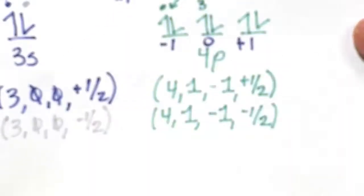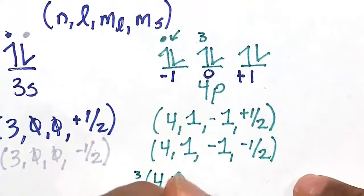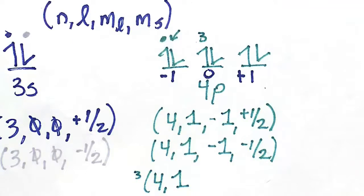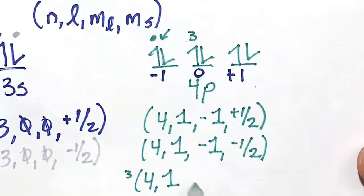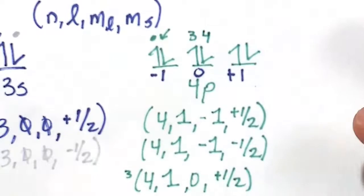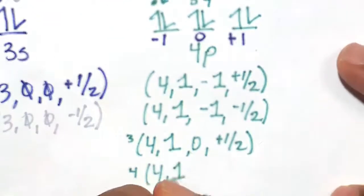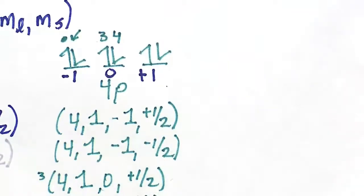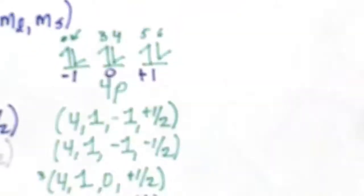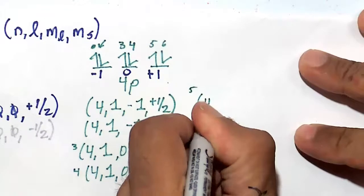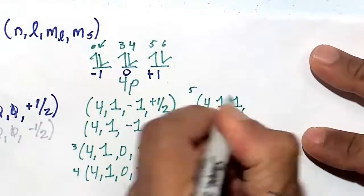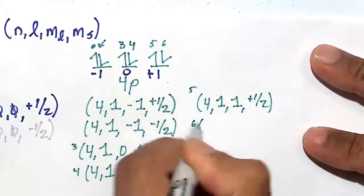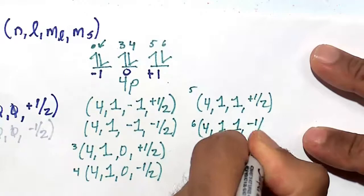Electron 3 is n equals 4, l equals 1 for the p orbital, m sub l equals 0 for the middle slot, and m sub s is plus 1 half spin up. Electron 4 is exactly the same except m sub s is minus 1 half. Electron 5 is n equals 4, l equals 1, m sub l is plus 1, and m sub s is plus 1 half. Electron 6 is the same but m sub s is minus 1 half.